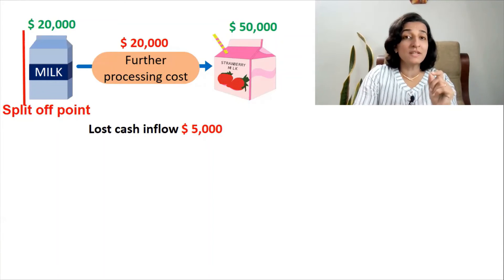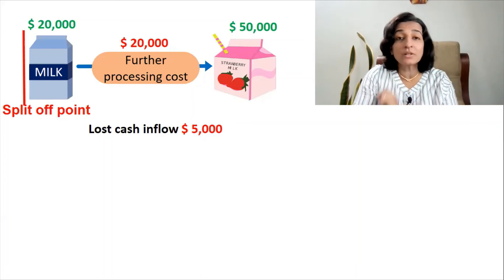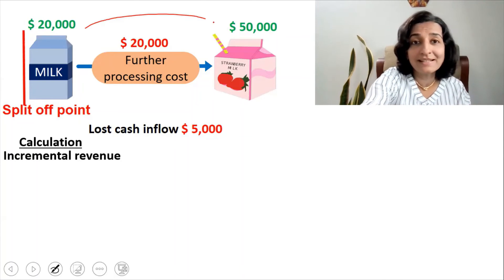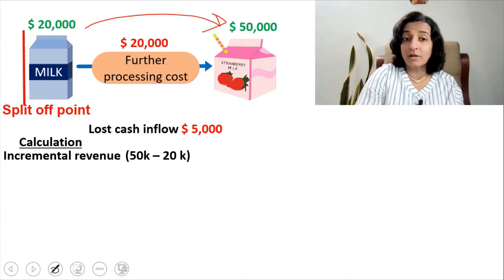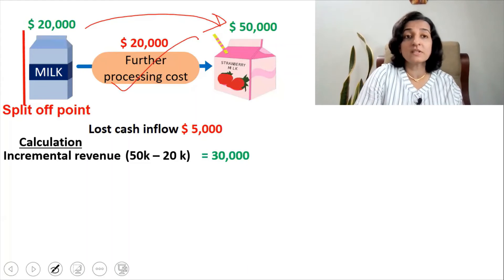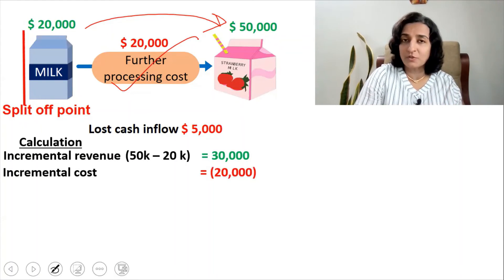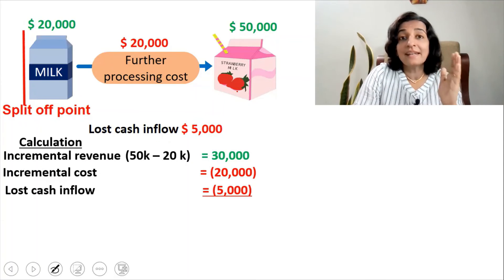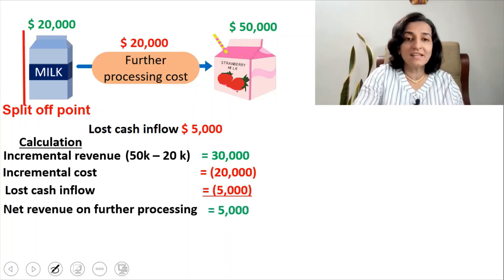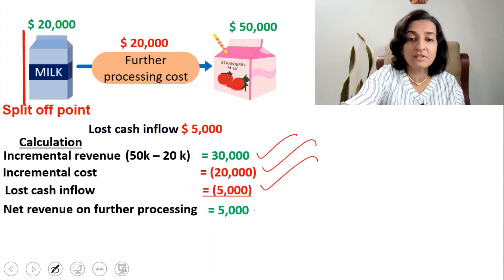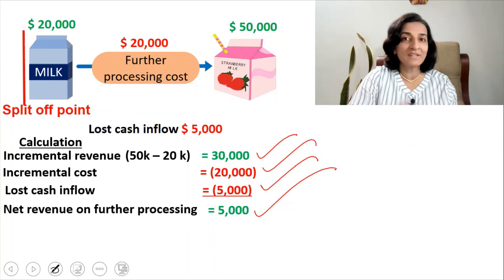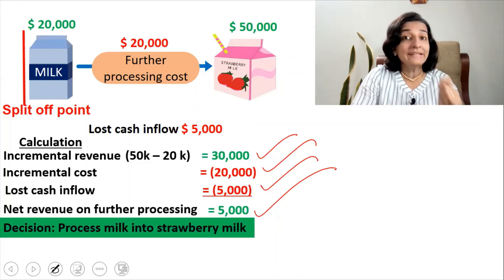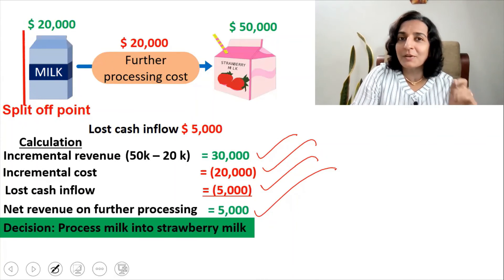Let's do the final calculation to see whether we should further process the milk into strawberry milk, considering only the relevant items. Incremental revenue: $50,000 minus $20,000 = $30,000. Reduce the incremental further processing cost of $20,000. Finally, reduce the lost cash inflow of $5,000. The net revenue from further processing is $30,000 minus $20,000 minus $5,000, giving a positive figure of $5,000. Since it is positive, the decision is to process the milk into strawberry milk, as it yields an additional $5,000 to the company.